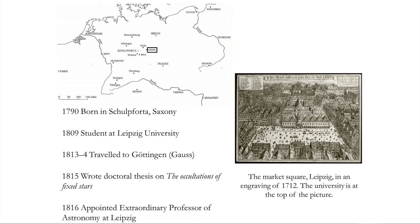Leipzig University, which Möbius entered in 1809, is one of the oldest German universities, founded 400 years earlier in 1409. Möbius initially studied law — his family's choice — but quickly changed to his preference of mathematics, physics, and astronomy.